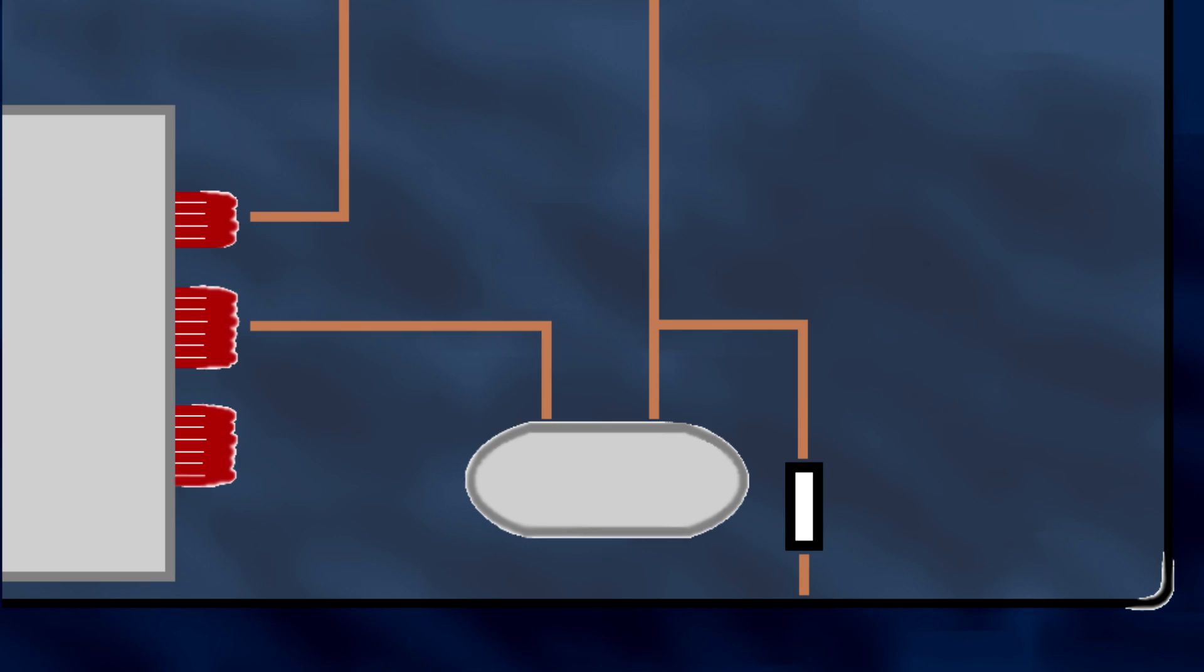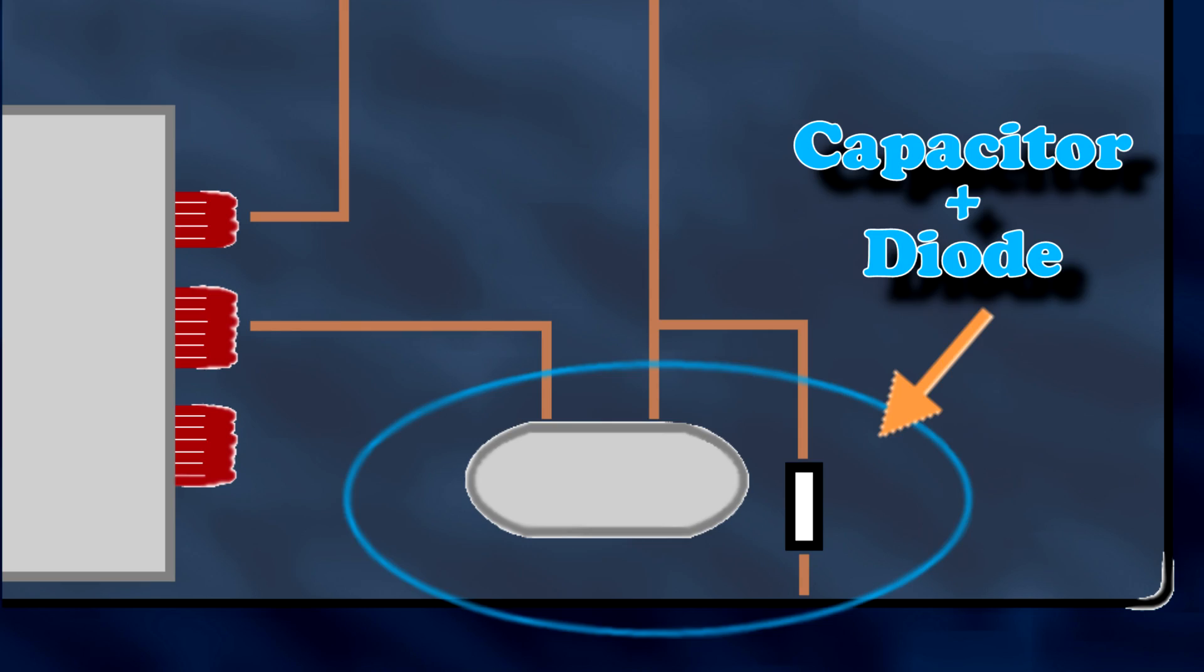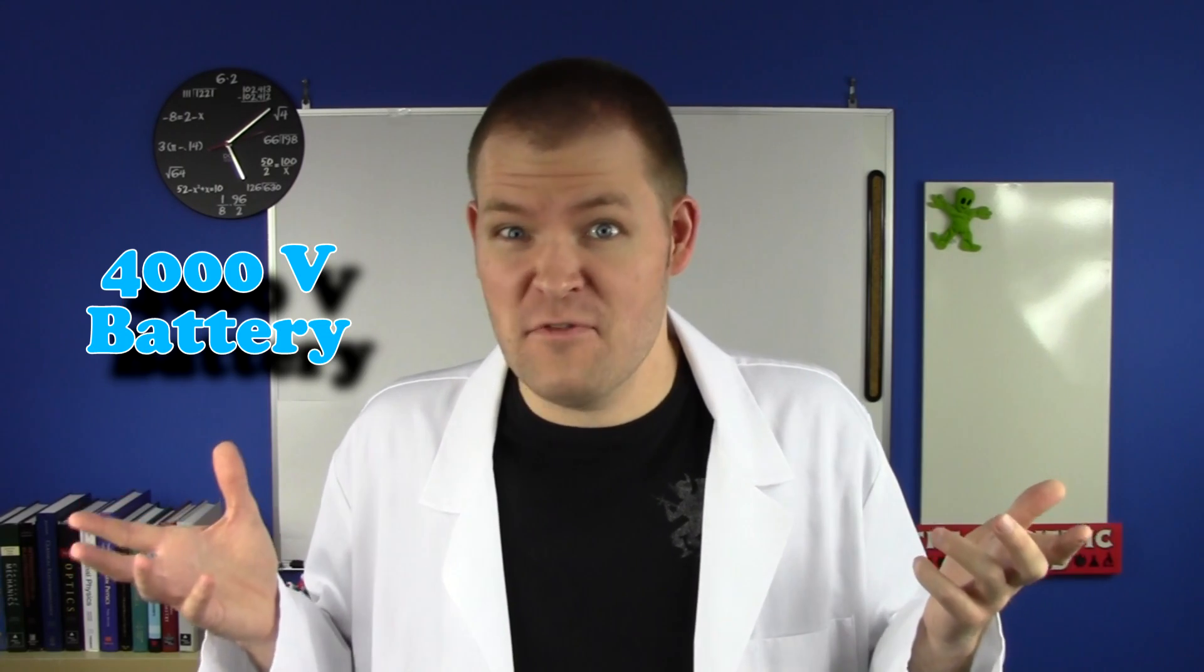Anyway, how the capacitor and its peripherals work would require an entire video to explain. So I'll spare you the agony and just say that it turns the AC that you'd normally get into DC. The whole process inadvertently ends up doubling the voltage. Basically, it's like having a 4,000 volt battery that never dies.